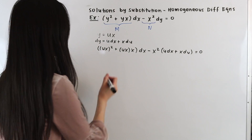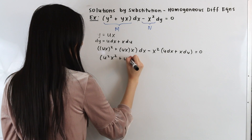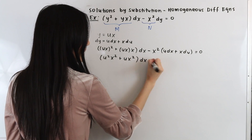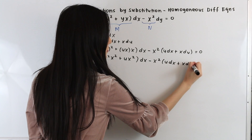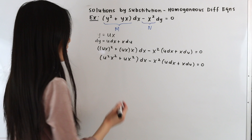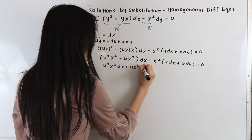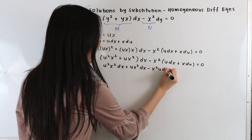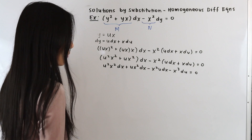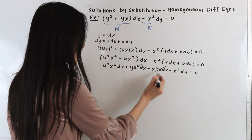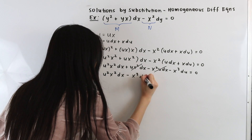Expanding, we get u squared x squared dx plus ux squared dx minus x squared u dx minus x cubed du equals zero. We can see that the ux squared dx and negative x squared u dx terms cancel out, leaving us with u squared x squared dx minus x cubed du equals zero.